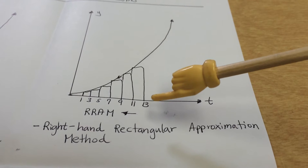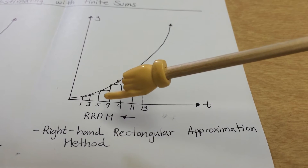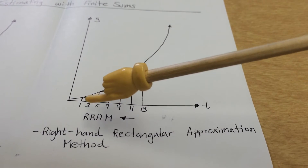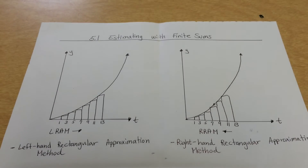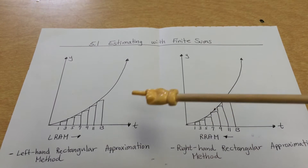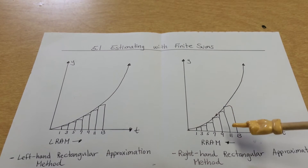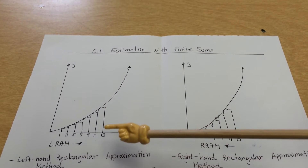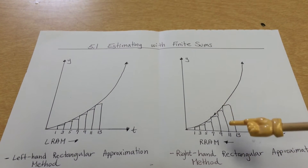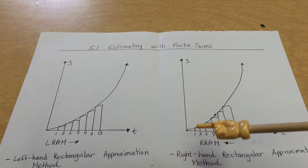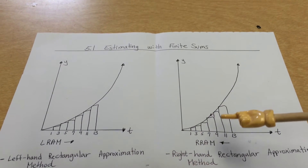The RRAM goes the opposite direction. We start from the right hand, find base times height for each rectangle, and include every single one of those except for this last little box. If I had to choose between the RRAM and the LRAM, RRAM will probably be the best choice because this big box is included, whereas the LRAM did not include it.